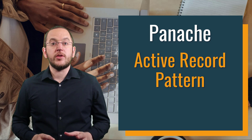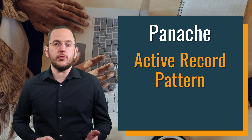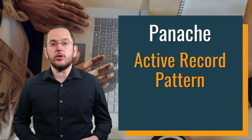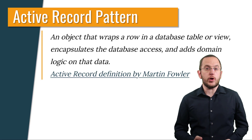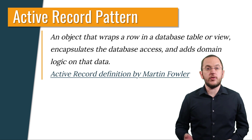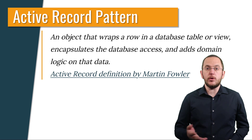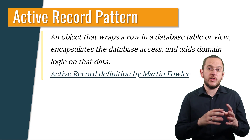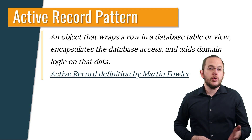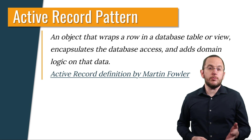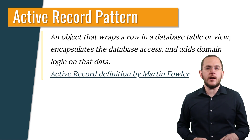In the last video of this series, I gave you a general introduction to Panache. I recommend you watch that video first. You will find it here and in the video description. Let's take a closer look at the ActiveRecord pattern. Martin Fowler describes the pattern as follows: an object that wraps a row in a database table or view encapsulates the database access and adds domain logic on that data. You probably already recognize the difference between the ActiveRecord pattern and the usual approach to design and work with your entity classes.